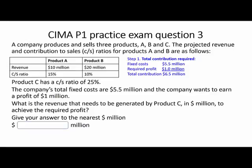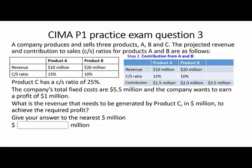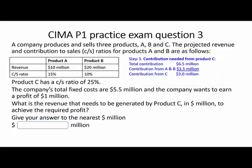We know the fixed costs are 5.5 million and the required profit is 1 million, so total contribution needed is 6.5 million. Product A has revenue of 10 million and a CS ratio of 15%, giving 1.5 million of contribution. Product B: 20 million at 10% gives 2 million of contribution — a total of 3.5 million from A and B. Since we need 6.5 million total, the contribution needed from product C is 3 million.